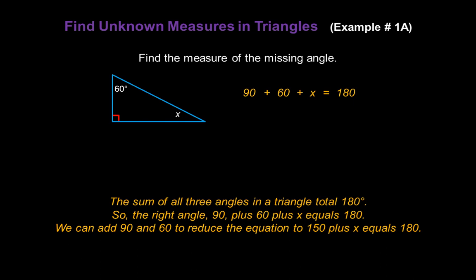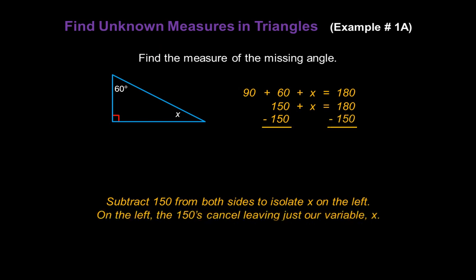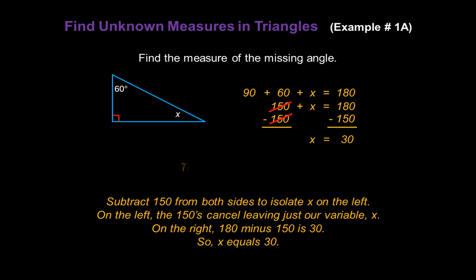We can add 90 and 60 together to reduce the equation to 150 plus x equals 180. Now subtract 150 from both sides to isolate x on the left — we have to do it to both sides to keep our equation balanced. The 150s will cancel, leaving us with just our variable x, and on the right, 180 minus 150 is 30. So x equals 30, or the missing angle is 30 degrees.